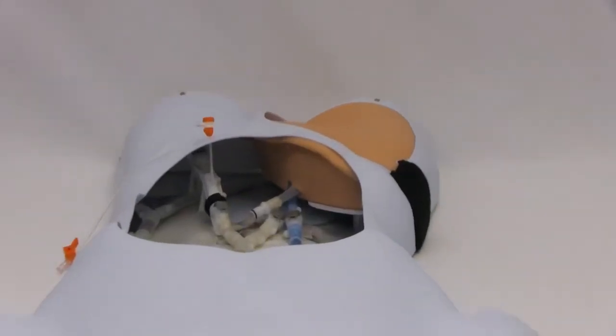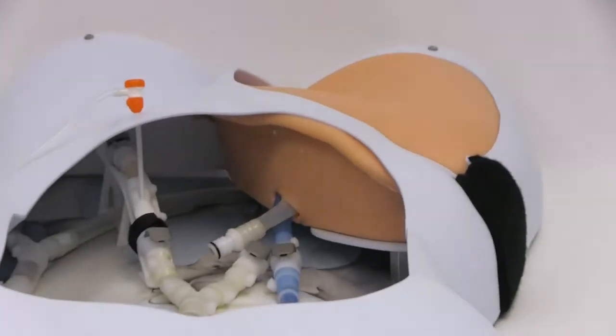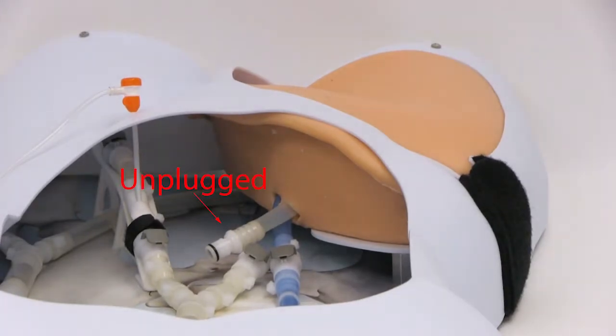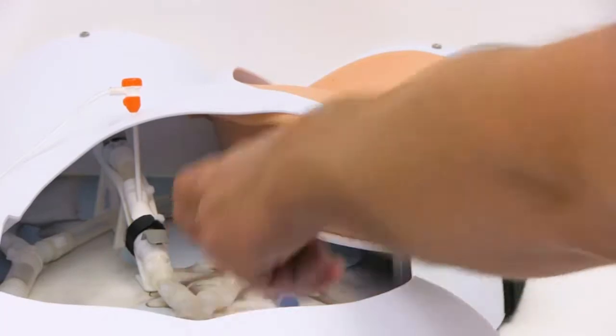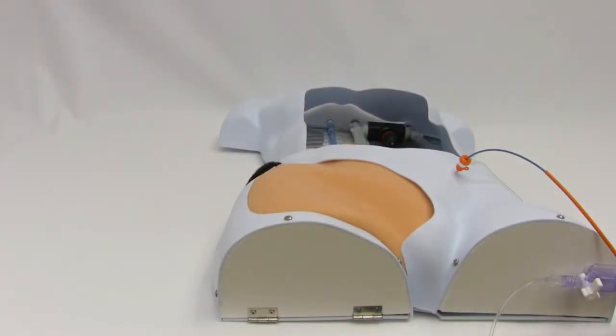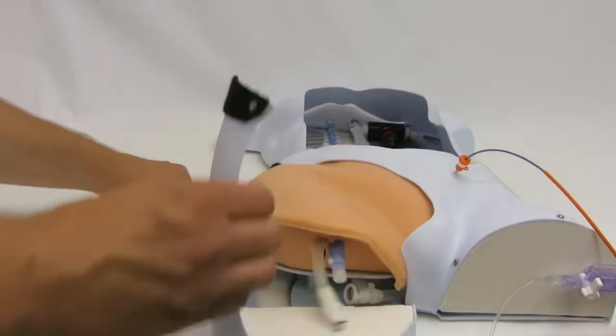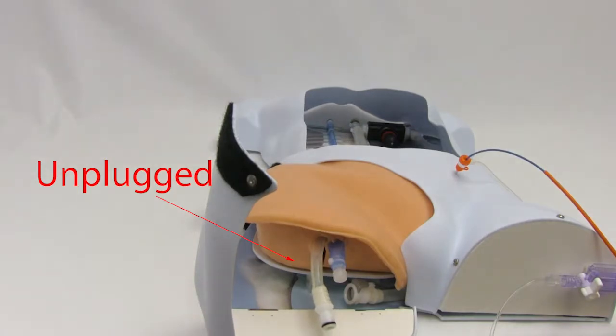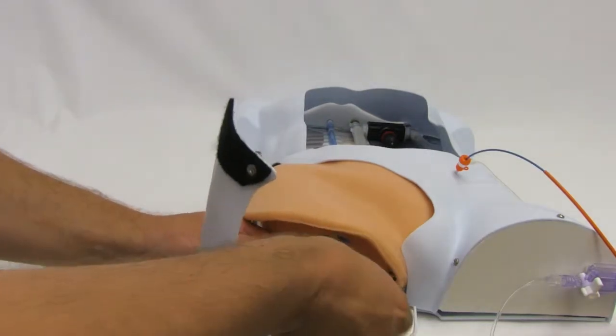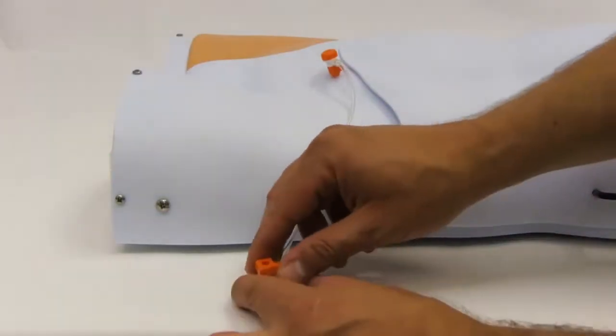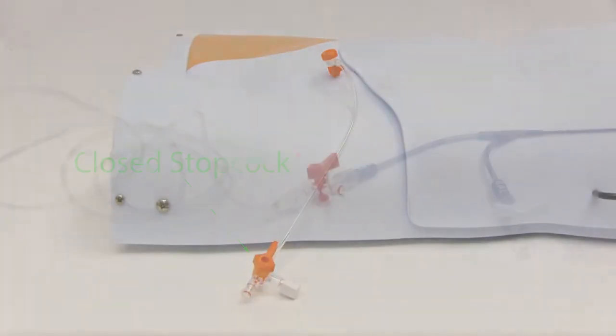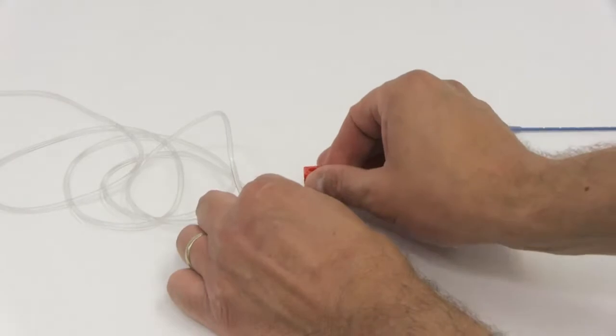Before turning on the pump, ensure that any leak points are closed off by checking the following: Ensure the thigh patch quick connections are plugged into the model in both the front and back. Ensure the introducer sheath's sidearm stopcock is closed. Ensure the artline stopcock is closed to atmosphere.